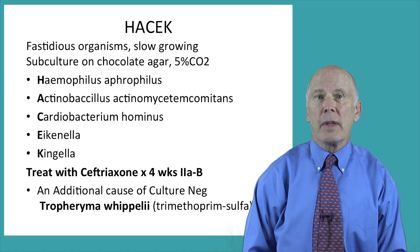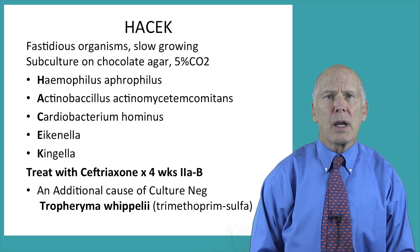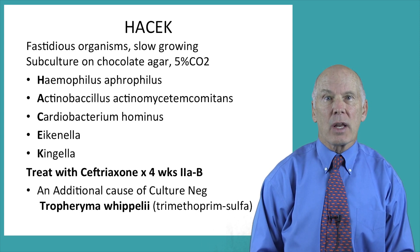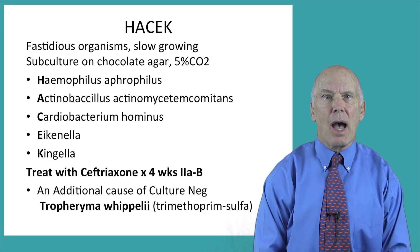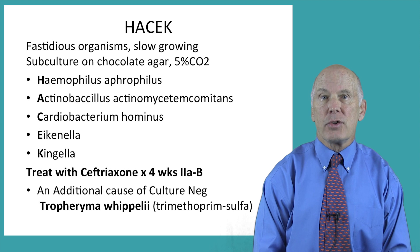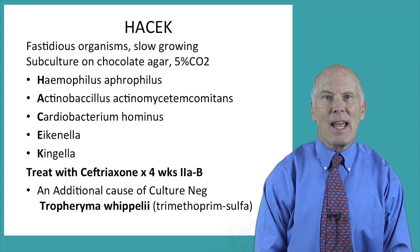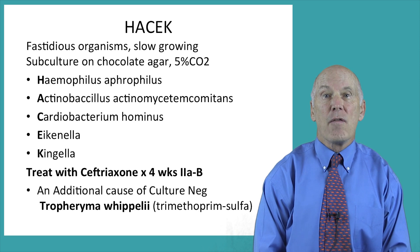One group of relatively uncommon organisms — comprising about three percent of infective endocarditis cases and often covered on exams — is the HACEK group. These fastidious organisms generally arise from the mouth. They are slow-growing gram-negative bacilli and should be subcultured on chocolate agar with five percent carbon dioxide. They are Haemophilus, Aggregatibacter, Actinobacillus actinomycetemcomitans, Cardiobacterium hominis, Eikenella, and Kingella. The treatment of choice is ceftriaxone for four weeks.